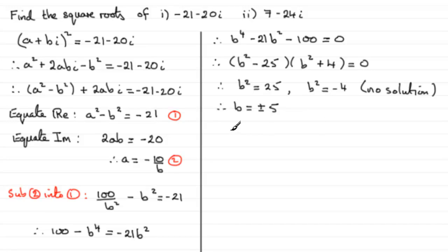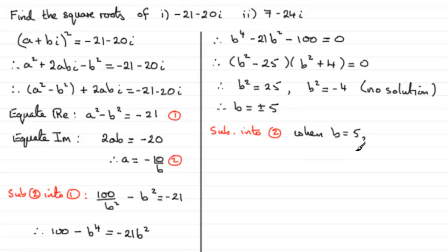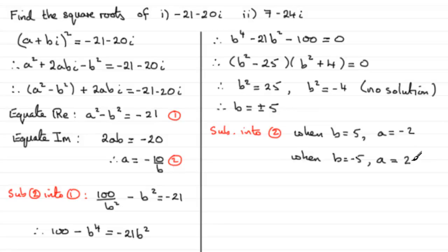Now substituting our values of b back into equation 2 to find corresponding values of a: when b equals 5, a equals minus 10 divided by 5, which gives a equals minus 2. When b equals minus 5, a equals minus 10 divided by minus 5, which gives a equals 2. So we have our square roots of minus 21 minus 20i.